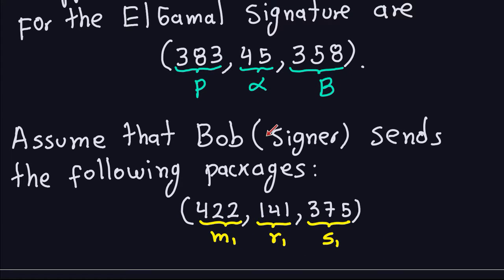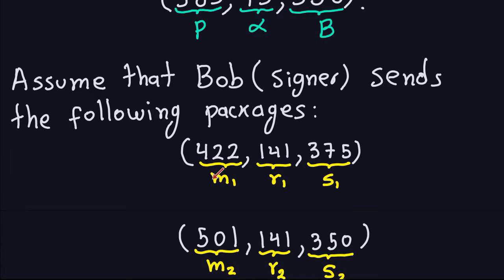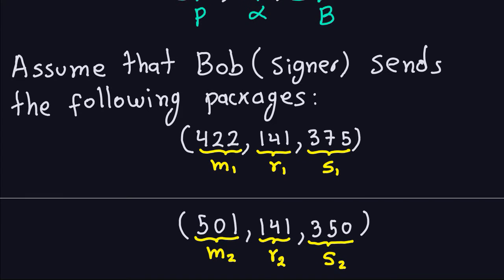Let's assume that Bob, which is the signer, sends the following packages. He's going to send two messages. Each one of them will be different, but they will use the same ephemeral key. So the message 422 with R1 141 and S1 375. This is the signature, this pair of numbers for this message. In a similar way, we have another message 501, and then we have the signature 141 and 350. So these are the two messages that are sent through the insecure channel.